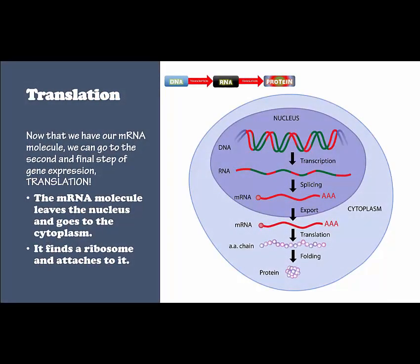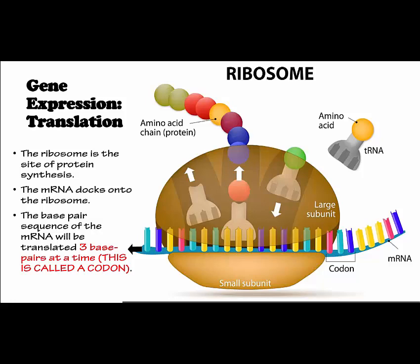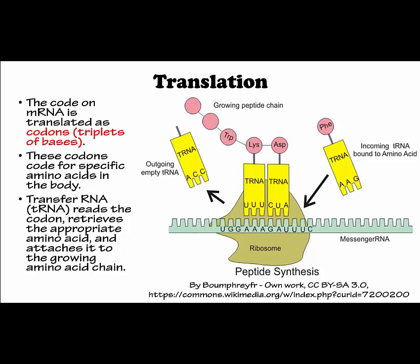Now that we have our mRNA molecule, we move to the second step of gene expression: translation. The mRNA molecule leaves the nucleus and goes to the cytoplasm, where it finds a ribosome and attaches to it. The ribosome is the site of protein synthesis. The mRNA base pair sequence is translated three base pairs at a time, called a codon. Transfer RNA, or tRNA, reads the codon, then retrieves the appropriate amino acid and attaches it to the growing amino acid chain.